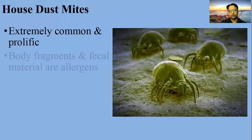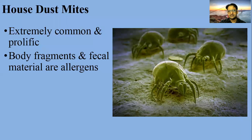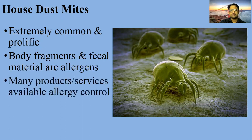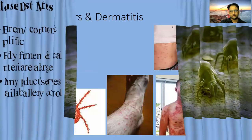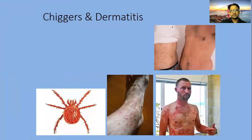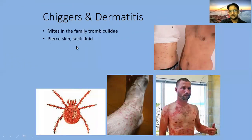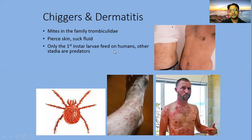House dust mites are extremely common and prolific — they reproduce rapidly. Body fragments and fecal materials from house dust mites are allergens. Many products and services are available for their control, but it is not an easy process. Chiggers cause dermatitis — these mites pierce the skin and suck fluid from the skin. Only the first instar larvae feed on humans; other stages are predators.